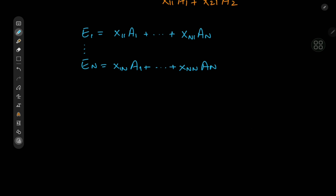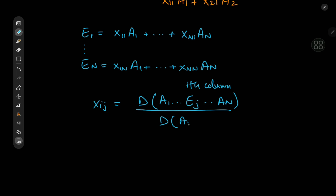Applying Cramer's rule to the system of equations, we get xij equal to the determinant of the matrix A with the i-th column replaced by the vector Ej, divided by the determinant of the original matrix A. Since the determinant is non-zero, we can determine each element xij such that Ax equals I, which means A has a left inverse. But we still need to prove it's also the right inverse.